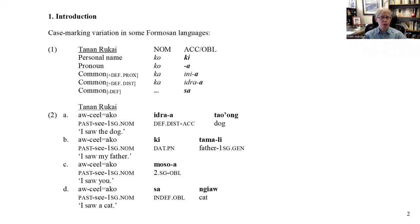To first look at some data in the Tanan dialect of Rukai, we have several different object markers. The preposition ki goes with names and the -a suffix goes with pronominals — both personal pronouns and also demonstratives. Demonstratives mark definite common MPs, and for indefinite MPs we have a different marker, which is Sa.